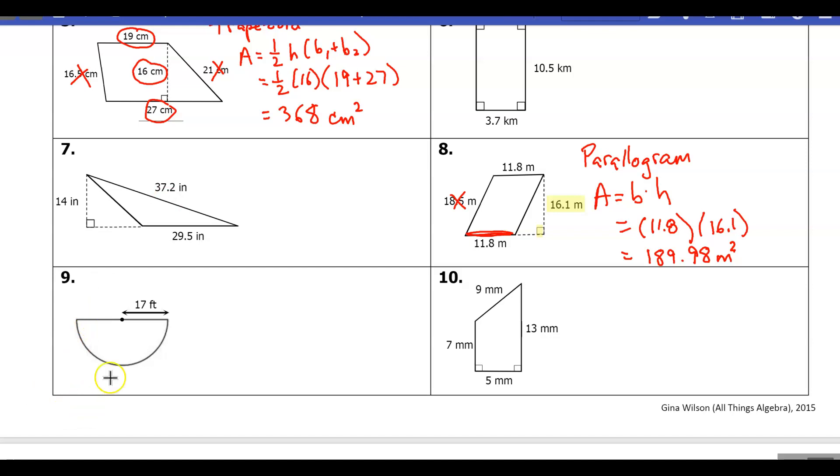Let's do one more for this video - number nine. This one doesn't look like any of our shapes, but we can see it's a circle, but it's only half of a circle. This is what we call a semi-circle - semi is half. We're going to take the area of a circle, which is pi times r squared, and then we're going to divide it in half because we only have half of the circle. We can see our radius here from the center to the circle is 17 feet, so I'm going to have pi times 17 squared over 2.